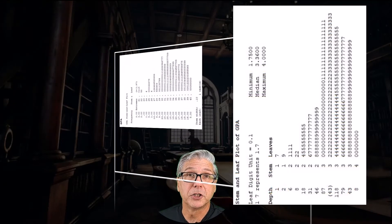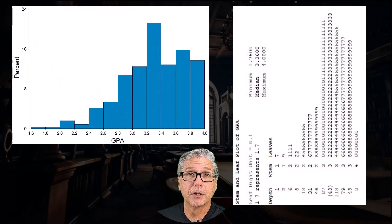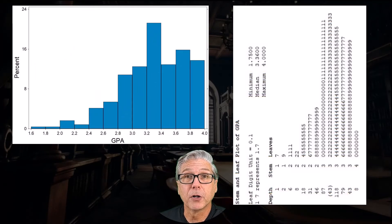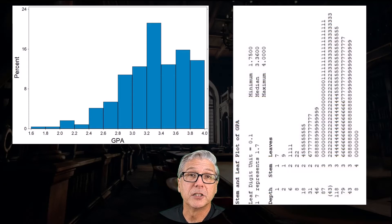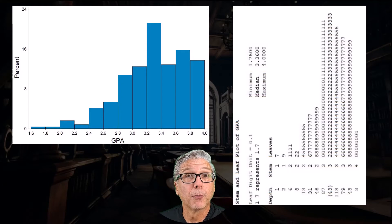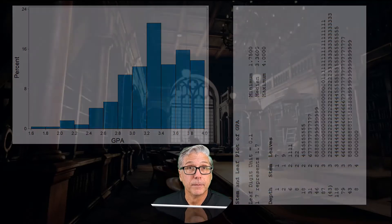We compare the shape of the stem and leaf display with the shape of the histogram we found earlier and you're going to see they provide similar information. Again, these plots add valuable information to the raw data we looked at earlier.